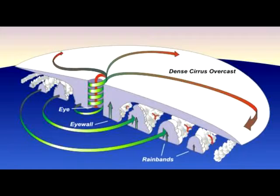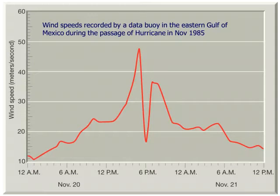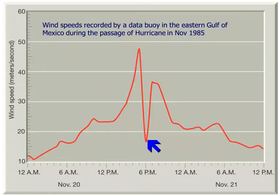The eye typically has a diameter of around 15 miles. Strong uplift causes relatively high pressure in the upper air, where we get anticyclonic rotation and divergence. Wind speeds measured by a data buoy in the Gulf of Mexico show the characteristic features of a passing hurricane — very high wind speeds as the eye walls cross the buoy, but low wind speeds right in the center as the eye of the hurricane crosses the buoy.